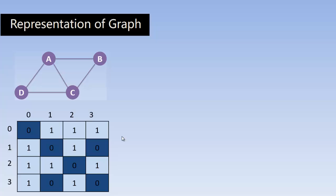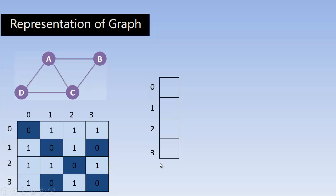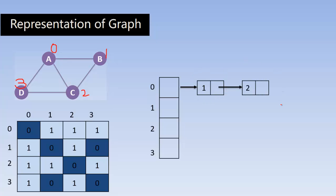To prepare an adjacency list I have to use the linked list and array concept. This array stores the vertices 0, 1, 2, 3. There is a link from 0 to 1, where 1 represents node B. This node is 0, this is 1, this is 2, and this is 3. There is an edge between 0 and 1, that is A and B, so the address of node 1 is stored in the pointer of node 0. There is also an edge between 0 and 2, and node 0 is connected to node 3 because there is an edge between them.